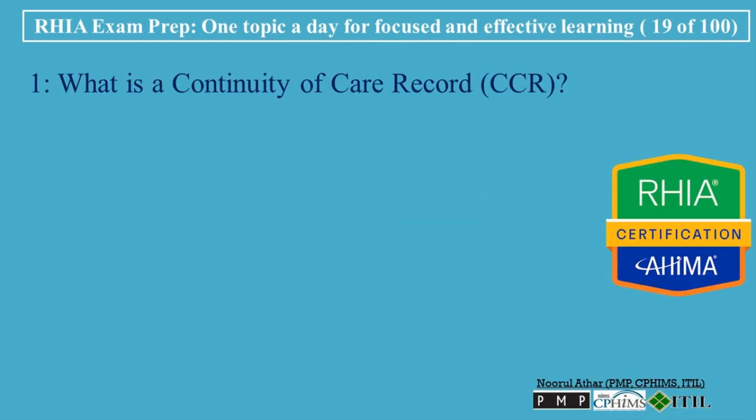What is a Continuity of Care Record, or CCR? The CCR is a standardized healthcare document that provides a snapshot of a patient's essential health information. It was developed to improve the quality and continuity of care when patients transition from one healthcare setting to another, such as moving from a hospital to a rehabilitation center or from one primary care provider to another. The primary goal of the CCR is to ensure that important health data follows the patient across different care settings, reducing the risk of medical errors and improving overall care coordination.